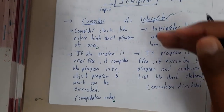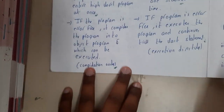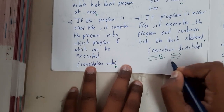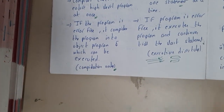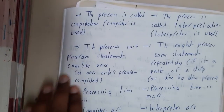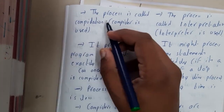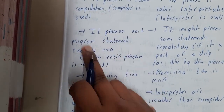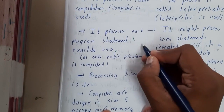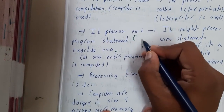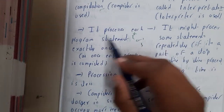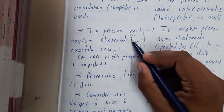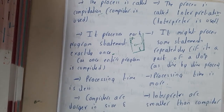For the interpreter, if a program is error-free, it executes the program and continues till the last statement. The interpreter goes one statement after another — first statement executes and shows output, then the next, and so on. If they are interrelated they will be linked, otherwise they are treated as individual statements. The compiler's process is called compilation; the interpreter's process is called interpretation.